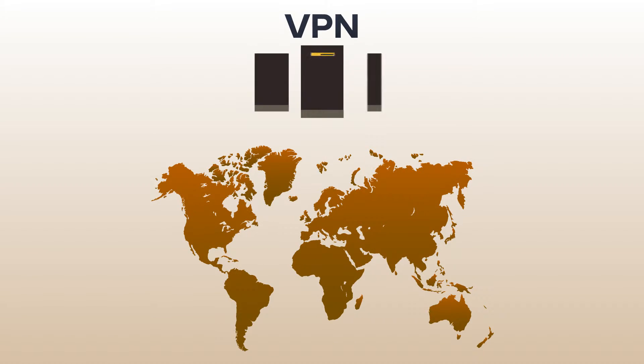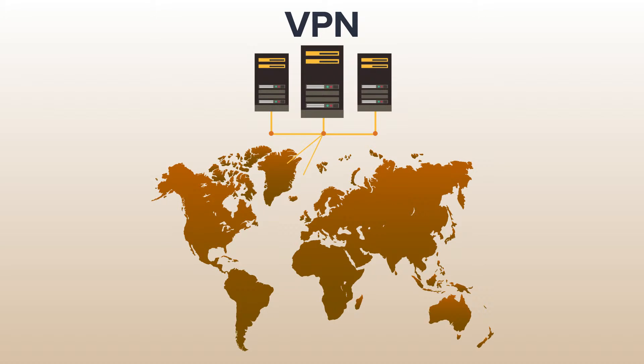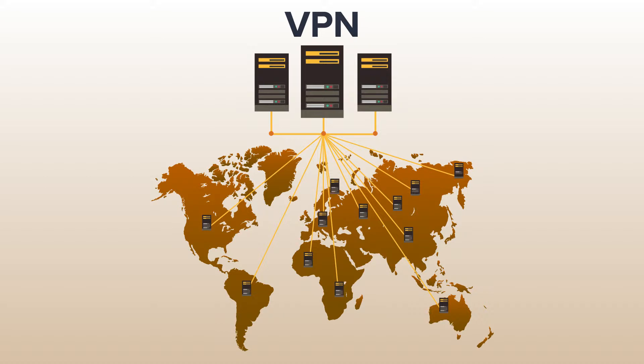Hey guys, changing your IP address to the country you want is really simple. All you need is a good VPN. A VPN is software you download that reroutes your internet traffic to a remote server. Simply connect to the country you want and your IP address will appear as if it's coming from that country.